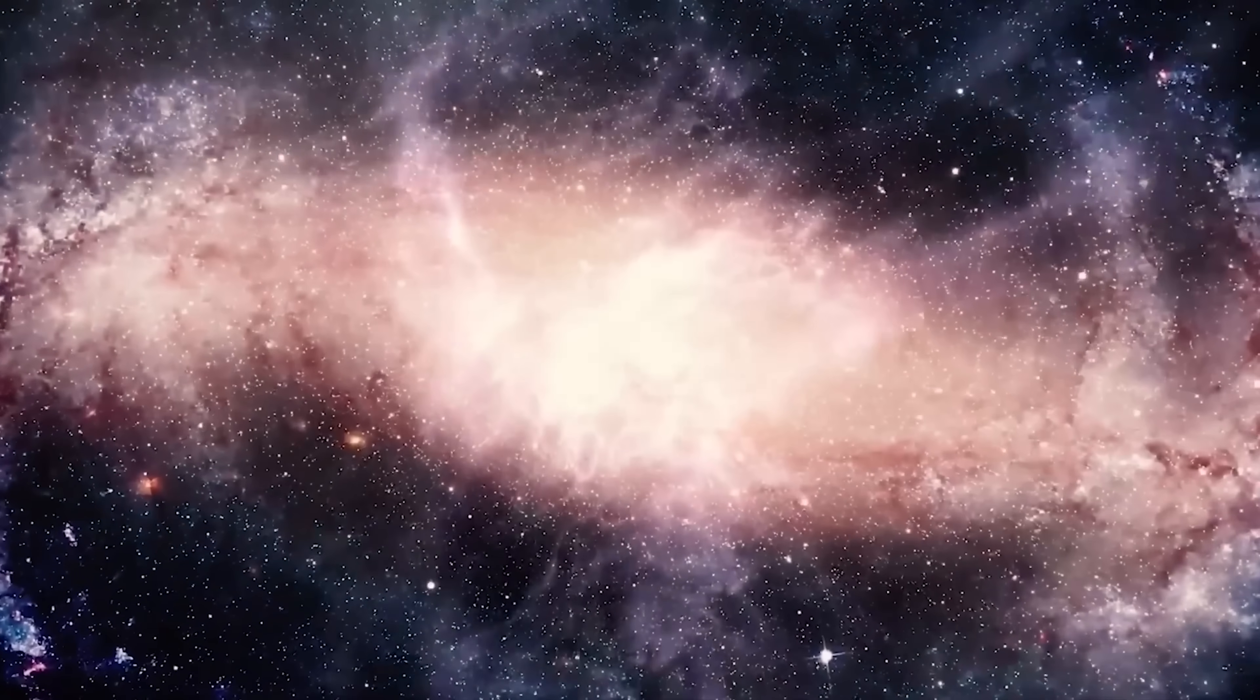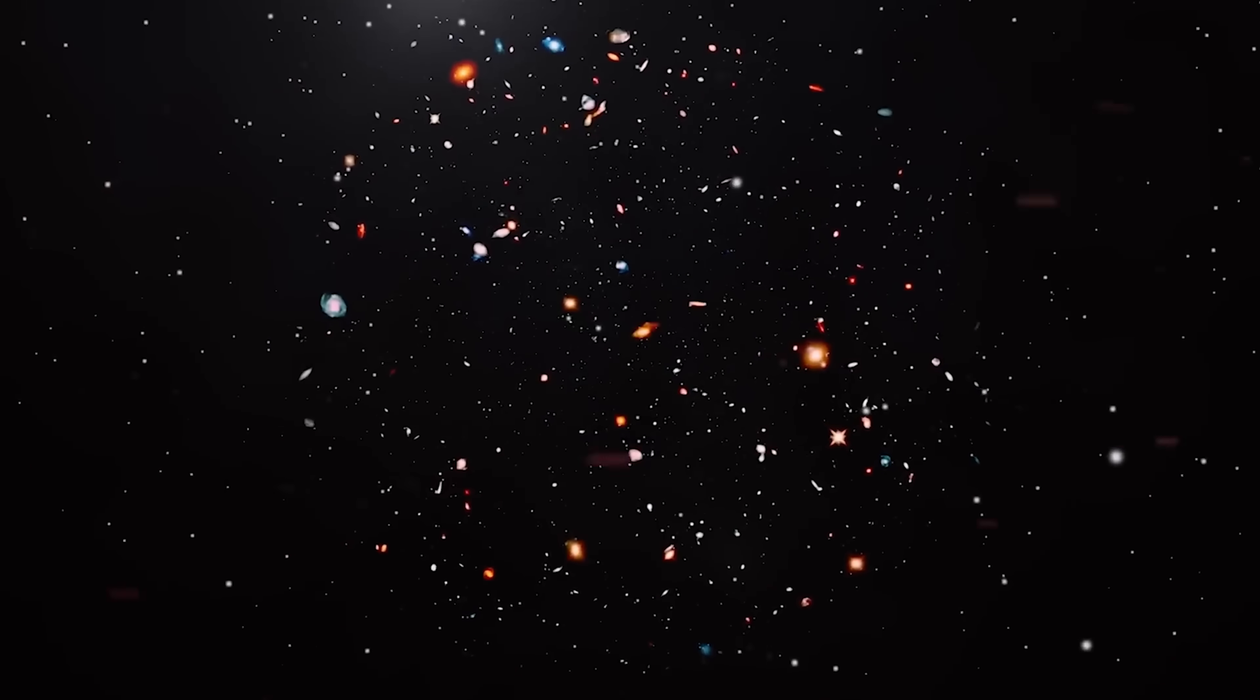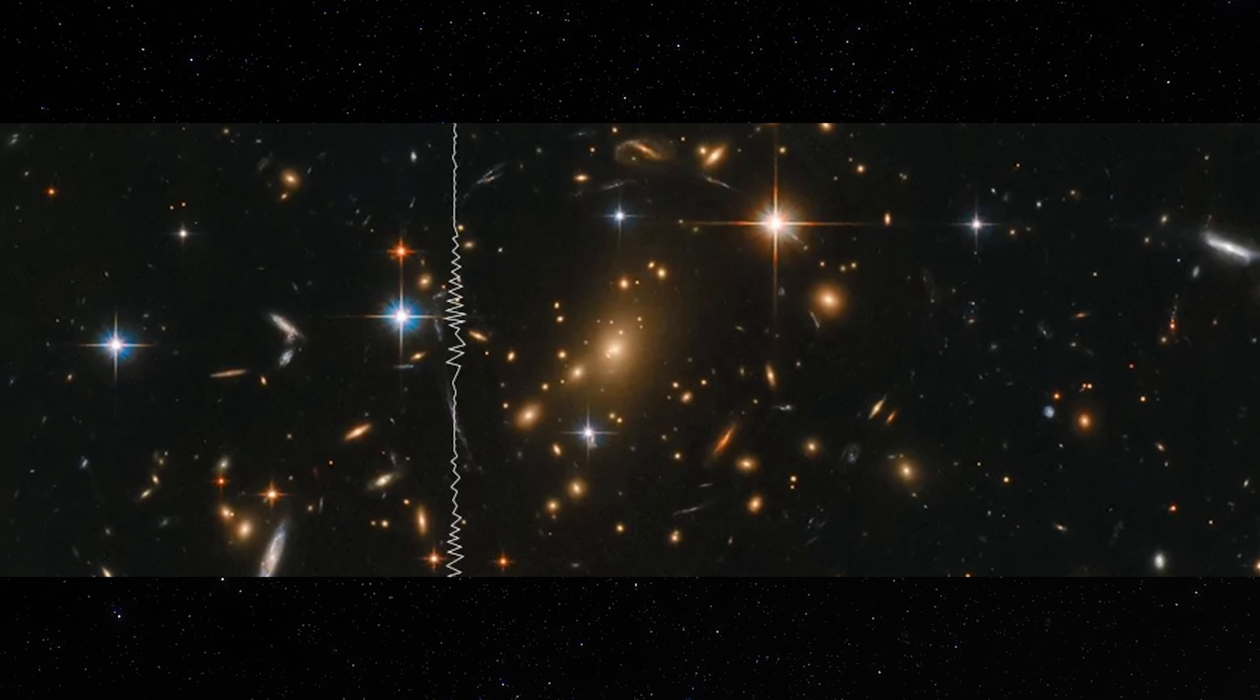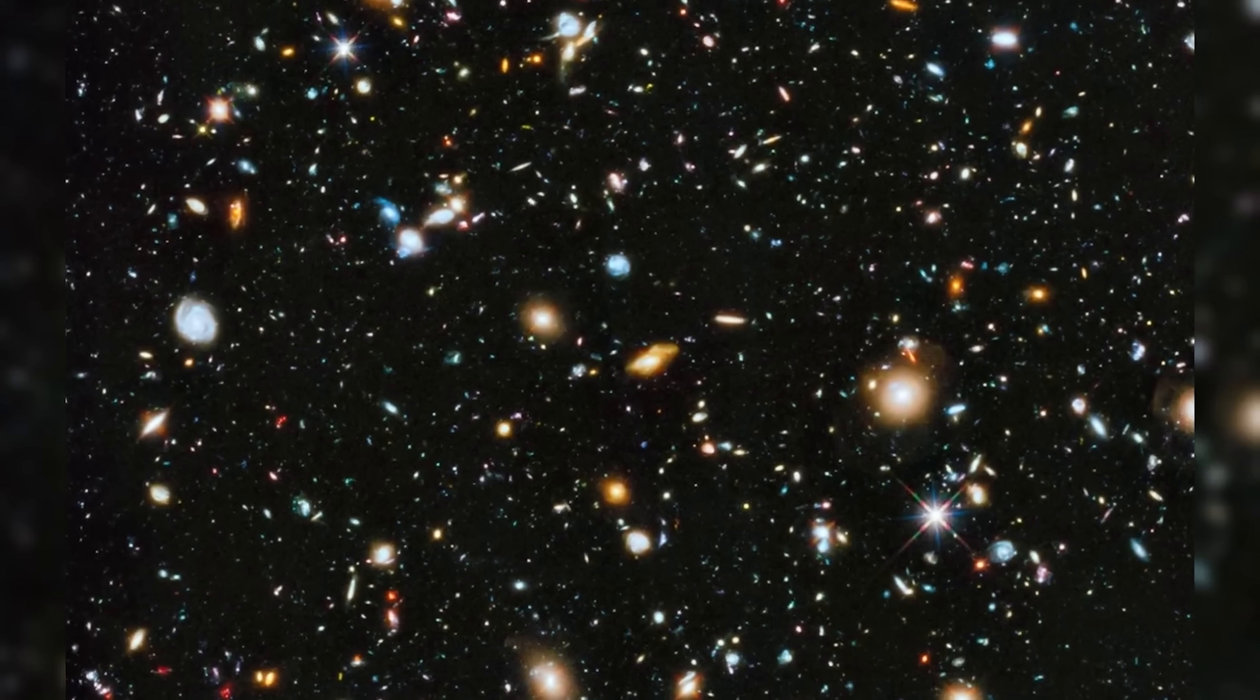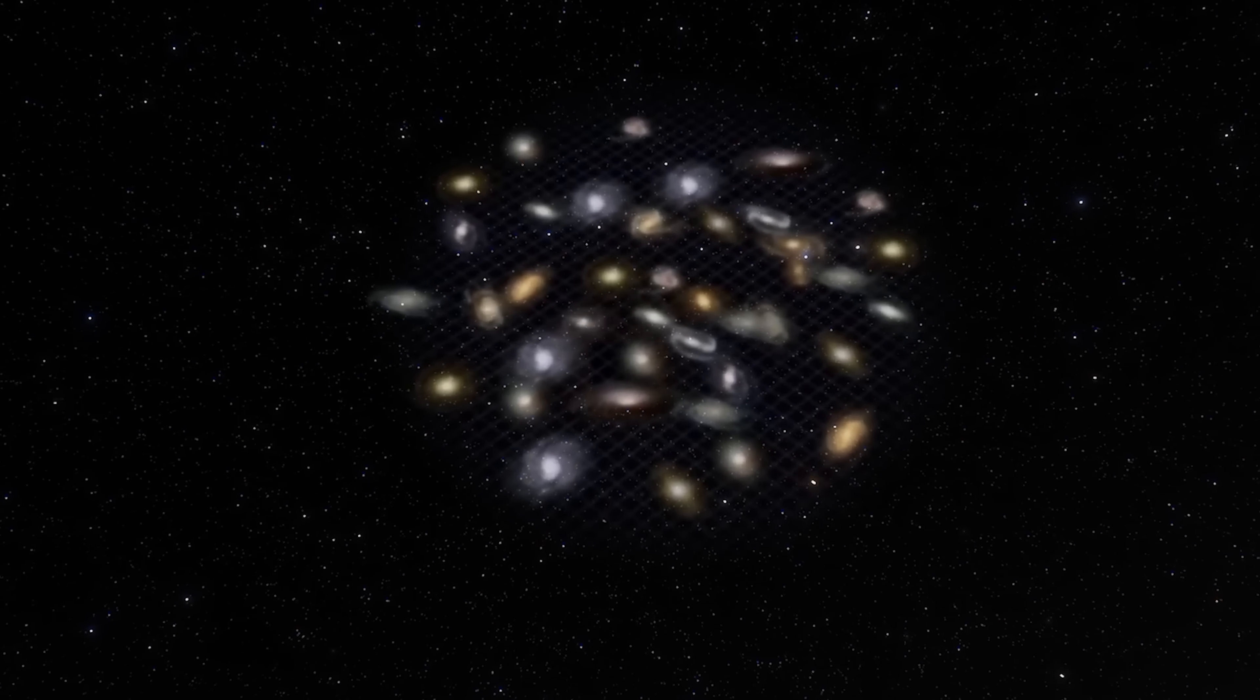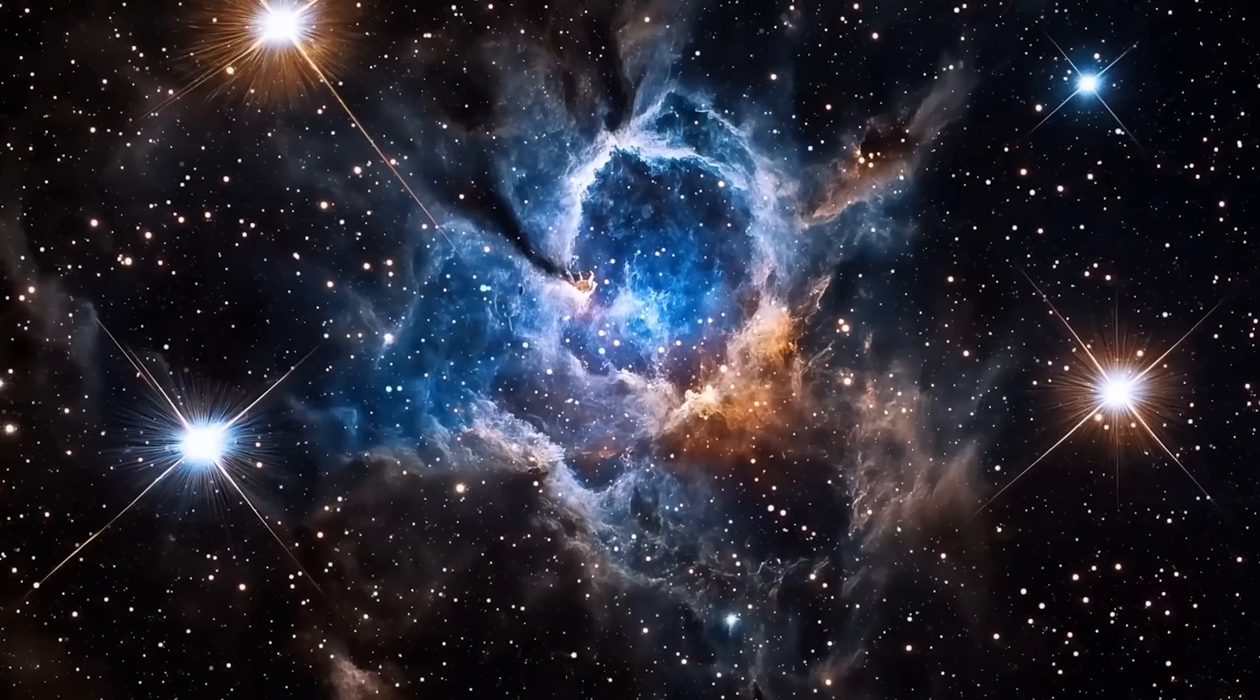And it's not alone. Webb has identified entire galaxies that appeared to be hundreds of millions of years older than the Big Bang. At first, astronomers laughed it off. They called it data noise, calibration errors, or redshift miscalculations. But the deeper Webb looked, the worse the contradictions became. It wasn't just one galaxy. It wasn't even ten. Webb kept finding more and more ancient structures that simply shouldn't exist. That's when cosmologists began to say the unthinkable.